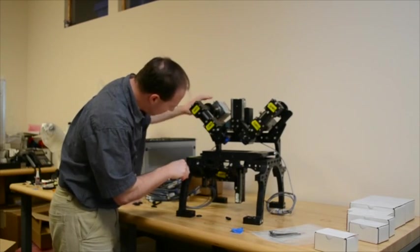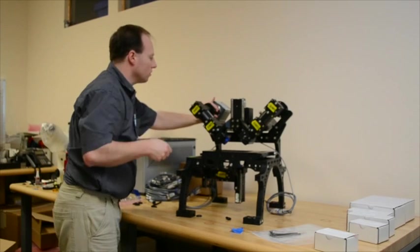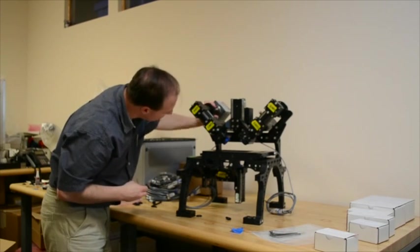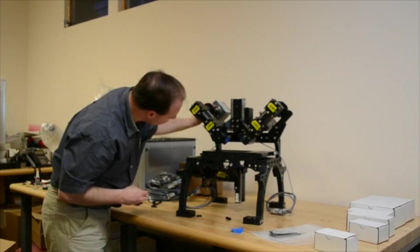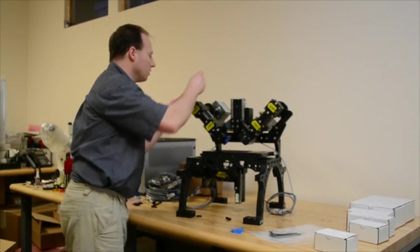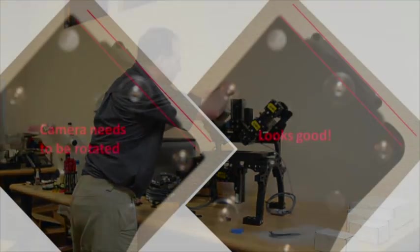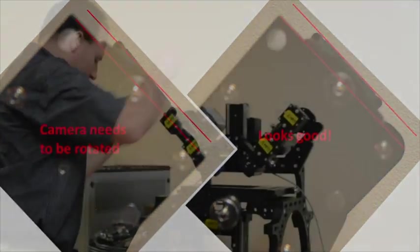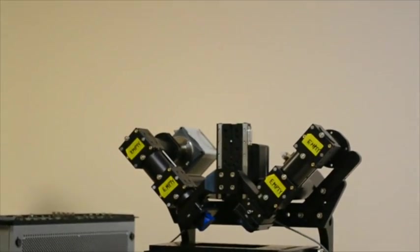And again, you want to loosen this set screw a little bit and turn the whole tube lens until you get it lined up and the camera lined up with the cube. And tighten it down. Same thing on the other side.